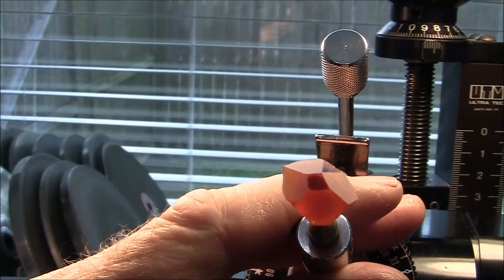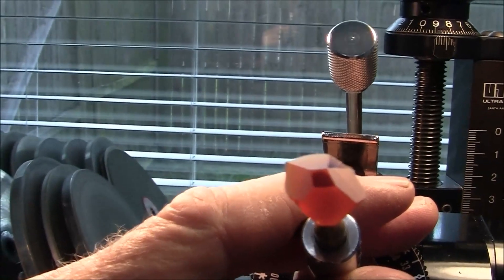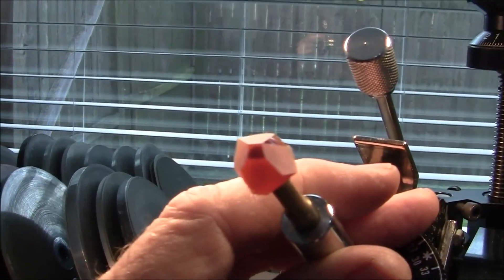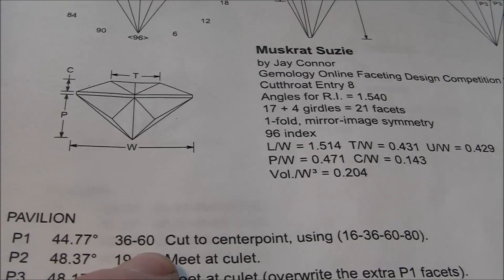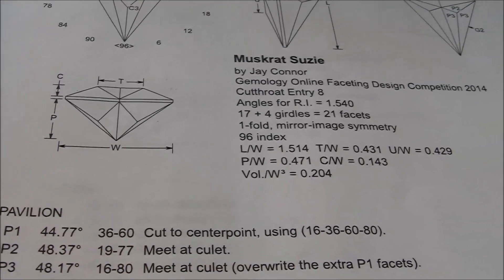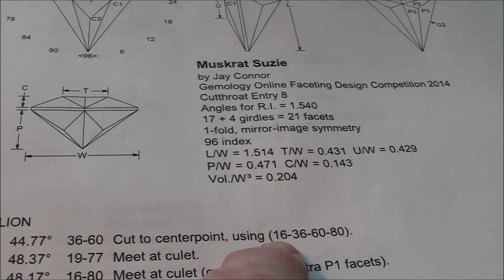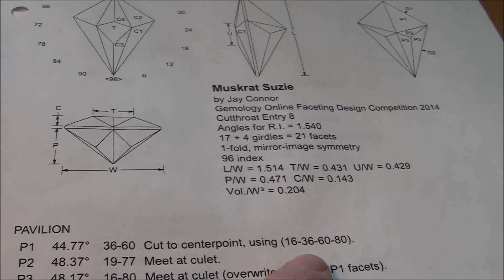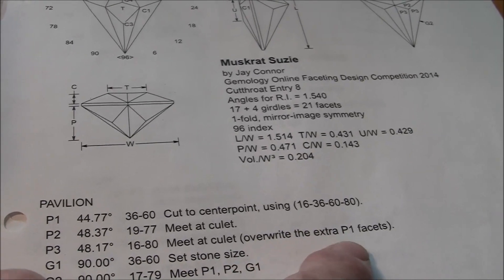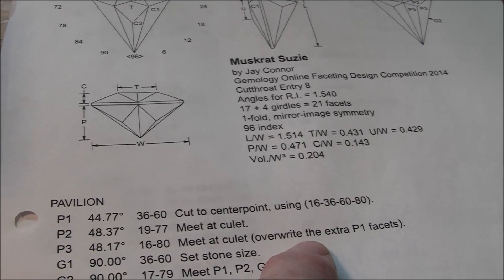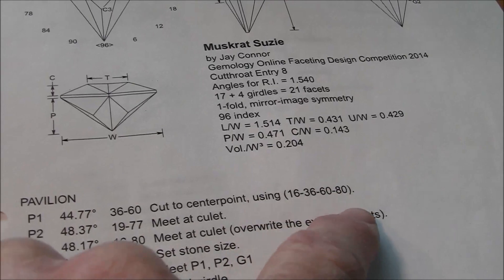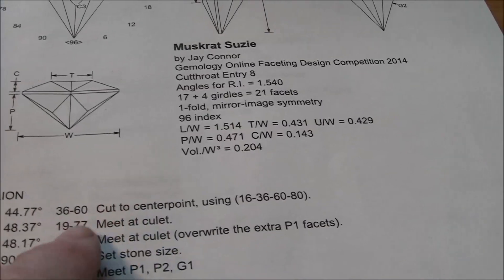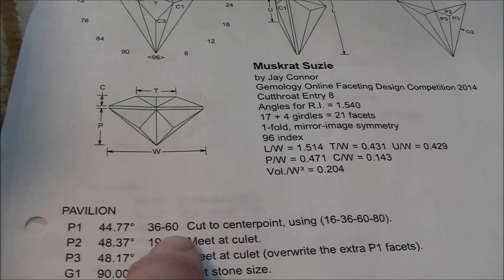I've still got some more cutting to do before I get my center point formed. I'm cutting three indexes. It's showing just 36 and 60, but you've got to cut all four of these indexes. And then later, we're going to cut over those extra two. We're going to be cutting over the 16 and the 80s, leaving just 36 and 60 to be finished and polished.